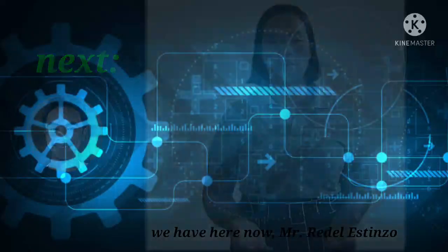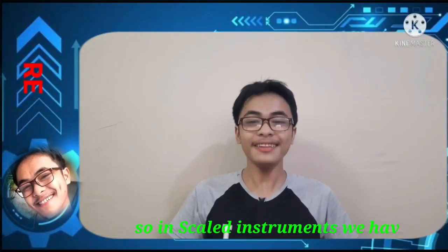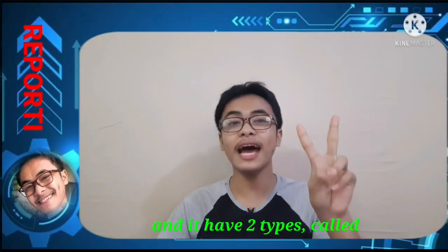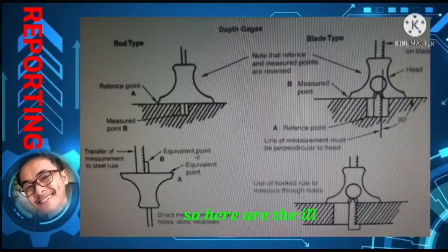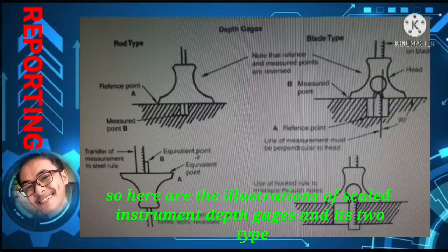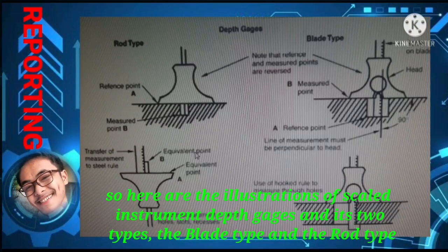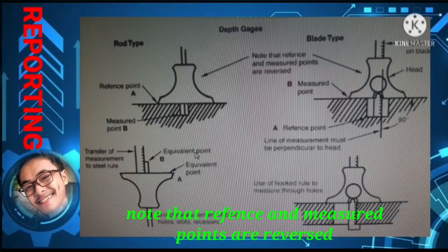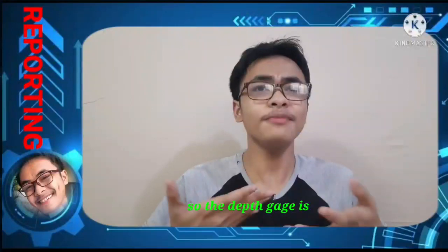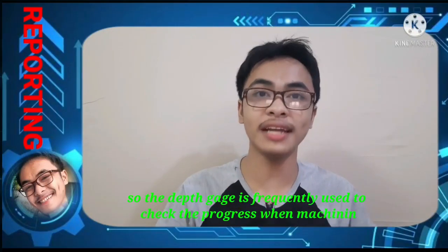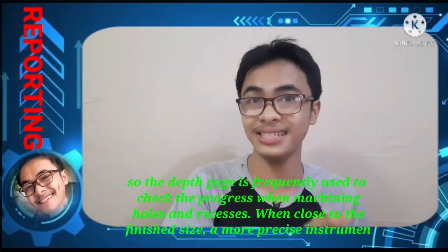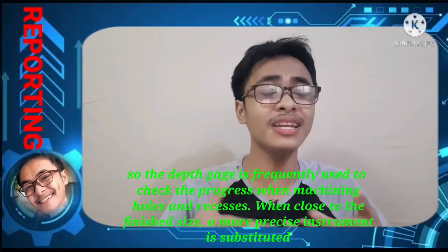For the continuation of our report on measurement with graduated scales and transfer instruments, we now cover scaled instruments. Dip gauges have two types: the rod type and the blade type. The reference and measured points are reversed in these types. The dip gauge is frequently used to check progress when machining holes and recesses; when close to the finished size, a more precise instrument is substituted.